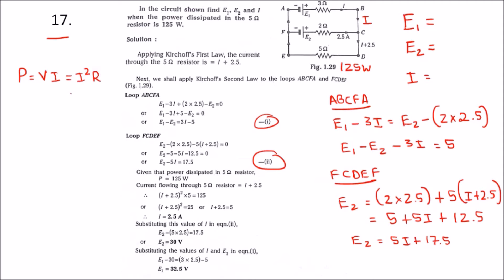We know i is (I plus 2.5) squared and r is 5, so power is 125.